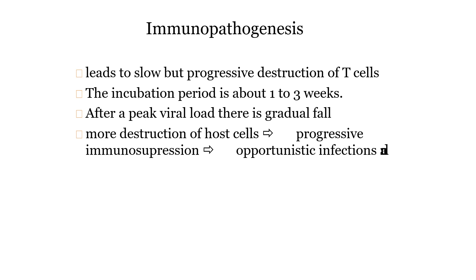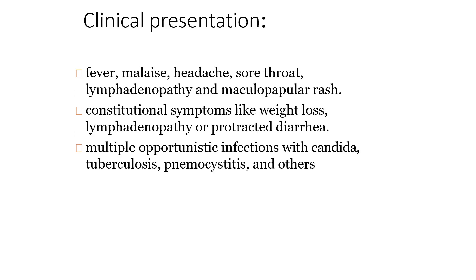Regarding pathogenesis: once the human immunodeficiency virus has entered the body, it slowly causes progressive destruction of the T-cells. The incubation period is one to three weeks. After a peak viral load, there is a gradual fall, followed by more destruction of the host cell. Progressive immunosuppression occurs, destroying T-lymphocytes, and because of the immunosuppression, opportunistic infections will arise.